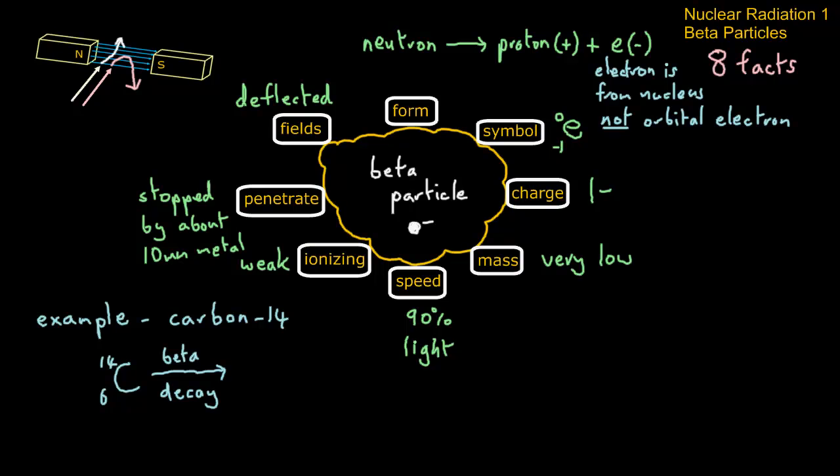Of course, we know we have the beta particle: no mass, a charge minus one. And so we must have then something with still with an atomic mass of 14, so we're going to see a change in the element now. And this element is actually nitrogen.